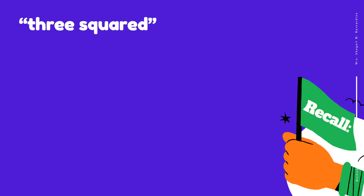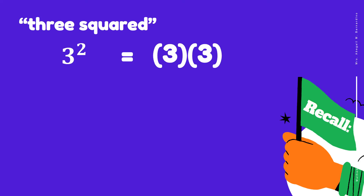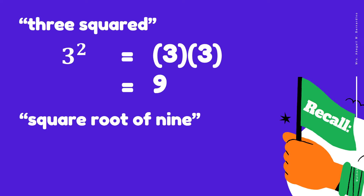Let's have a recall. When we say 3 squared, it is written in this form, and it means 3 times 3, and the answer is 9. When we say square root of 9, it is written in this form, and the answer is positive or negative 3.